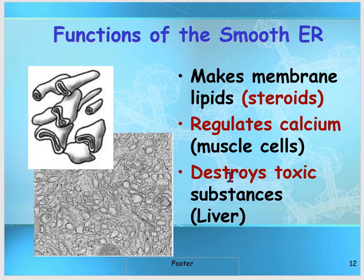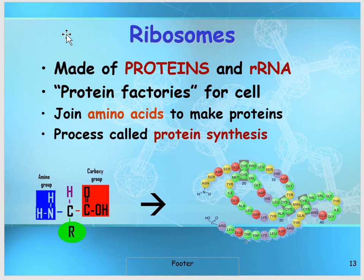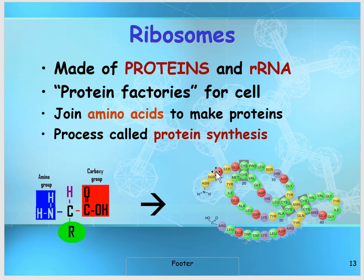Both the smooth and rough ER control and regulate the transport of materials in and around the cell. The next organelle is the ribosome. Ribosomes are the only organelle not bounded by a membrane, and they are made up of proteins and RNA — the small 'r' represents ribosomal RNA. Ribosomes make proteins by joining amino acids together — those circles represent amino acids — and this process is called protein synthesis.